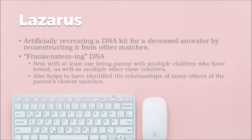The next utility is the Lazarus utility. The best analogy I have for this is Frankenstein's monster — how he took body parts from all different people and stitched them all together and made a person out of it. Imagine if you could do that with DNA of living people. This tool artificially recreates a DNA kit for a deceased ancestor from multiple different DNA samples.